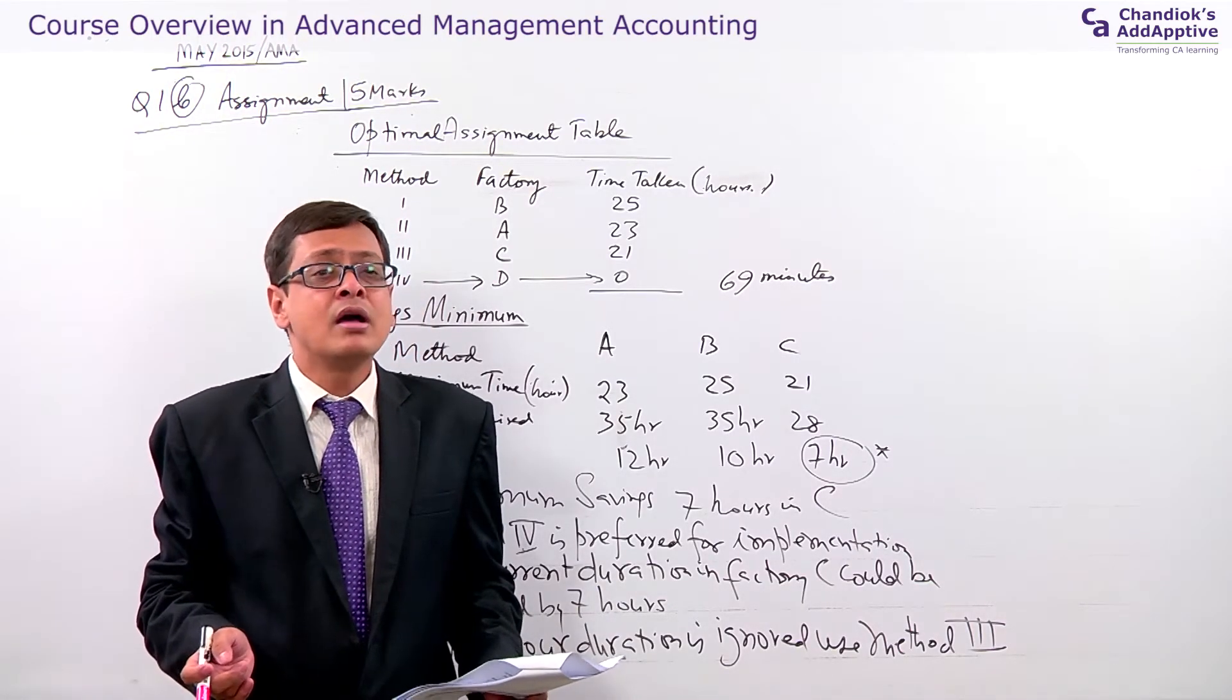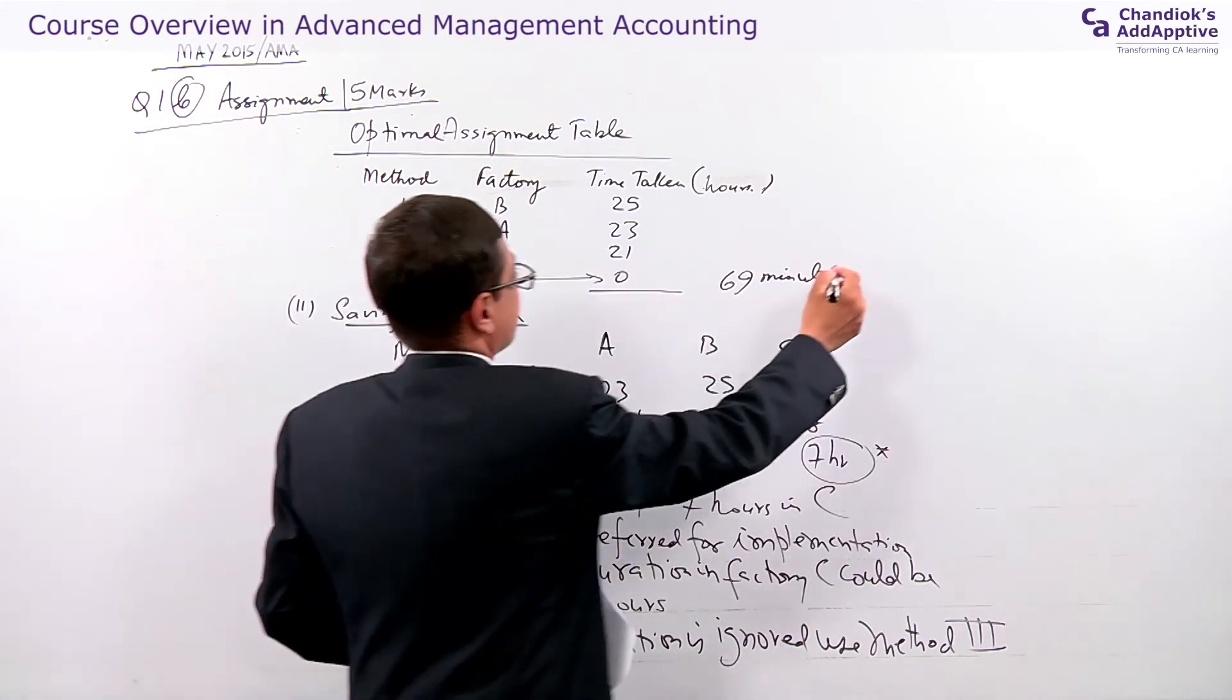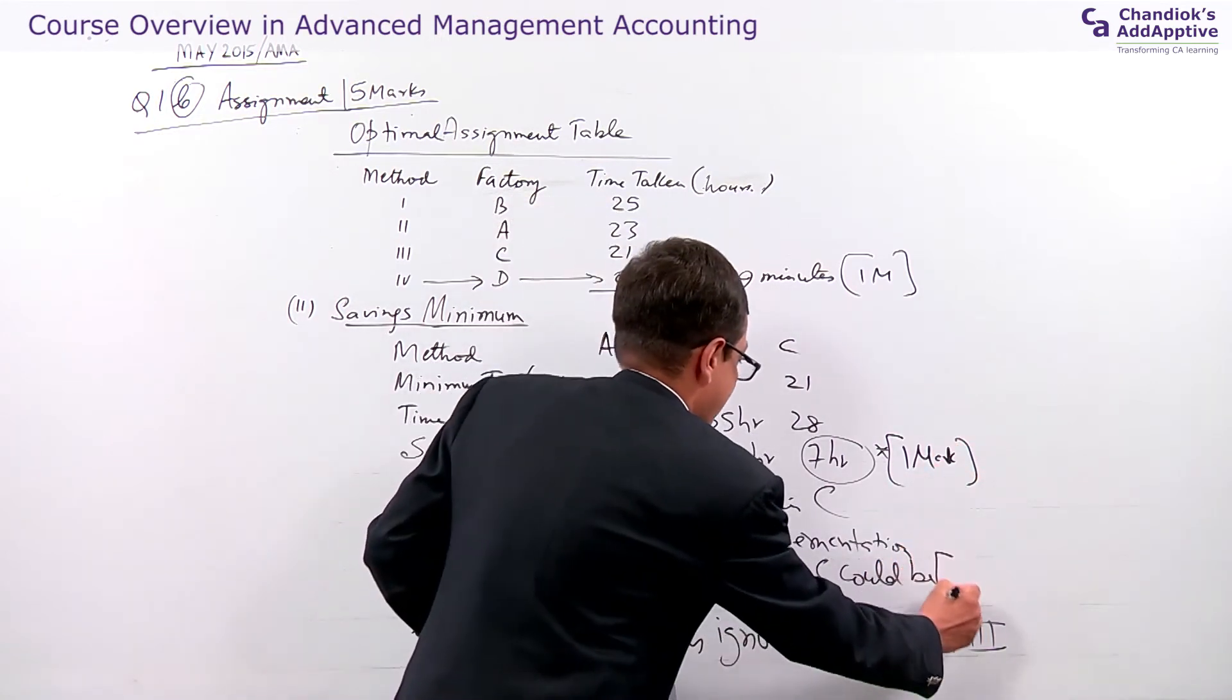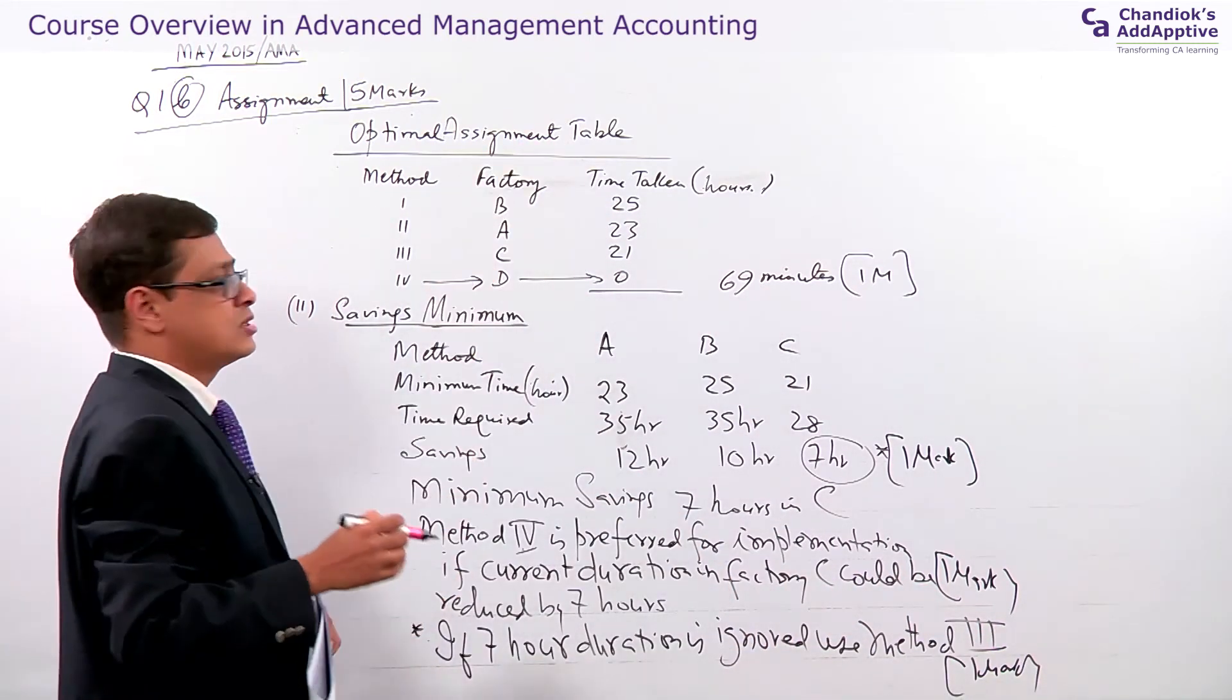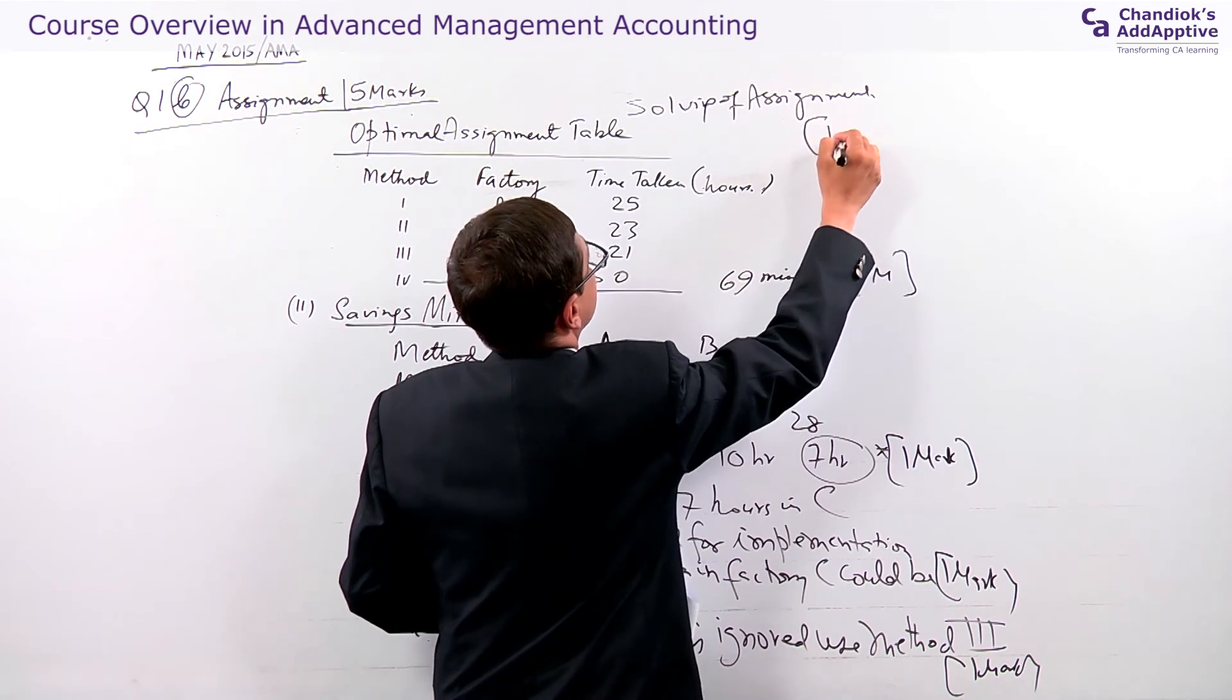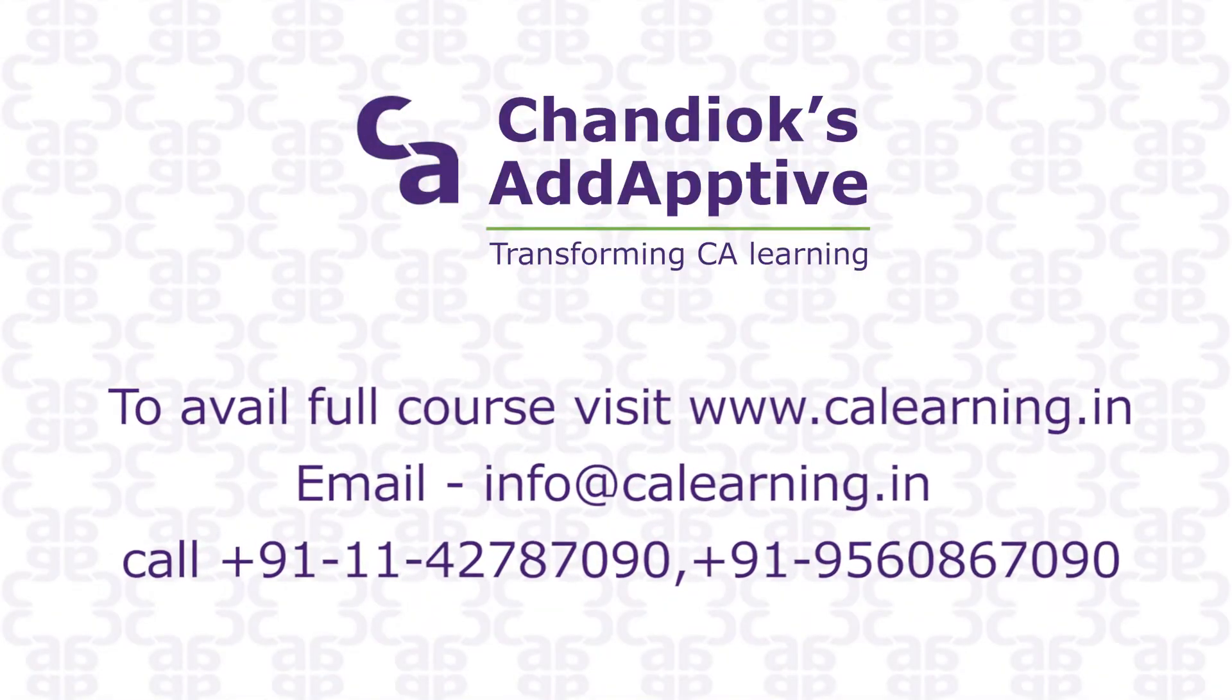How the examiner will award you the mark? What are the marking steps involved? This is the last task for this question. To get optimal assignment table, this one, you have one mark. To find the saving, you have one mark. One mark for this part and one mark for this part. The previous page covers the solving of assignment, that is one mark. So five marks have been awarded like this. If you follow it correctly, you get full marks.